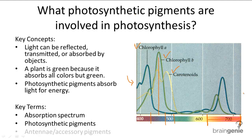So carotenoids — carrots — orange, red, yellow. Only the green pigment chlorophyll A actually participates directly in the light reactions. The other two, chlorophyll B and carotenoids, are known as accessory pigments or antennae pigments because they assist photosynthesis by capturing light energy and passing it over to chlorophyll A. In this way, the pigments work together to generate energy for initiating photosynthesis.